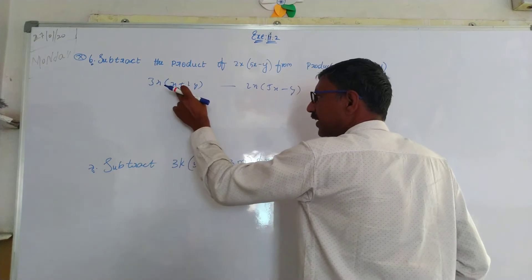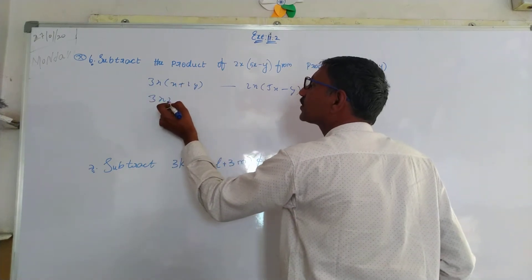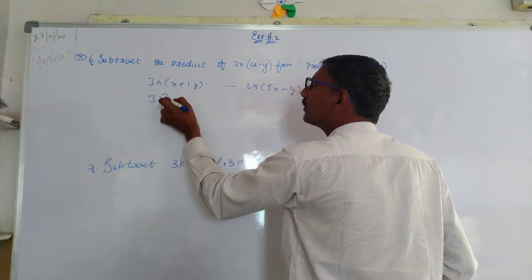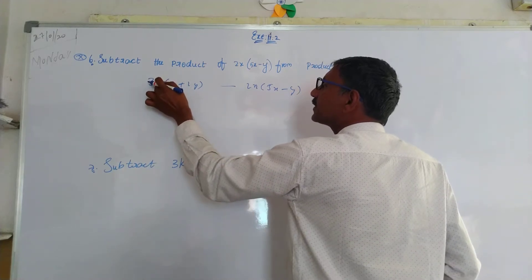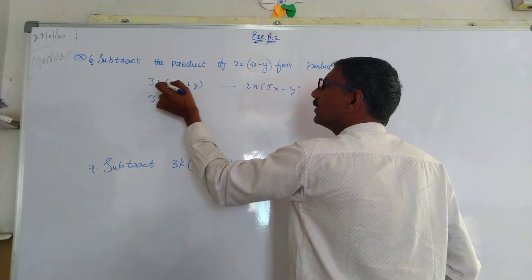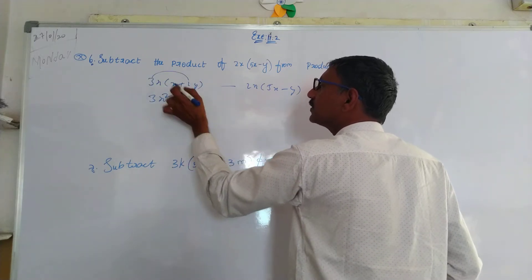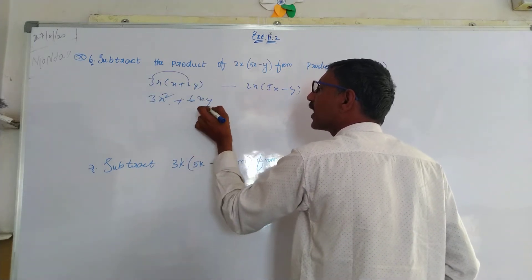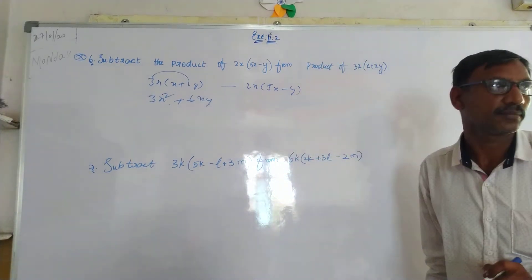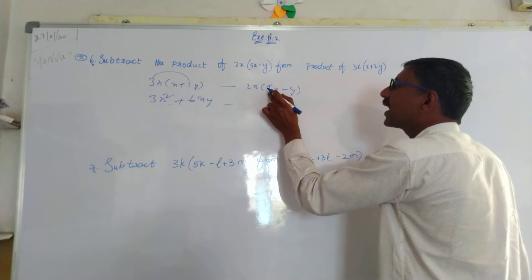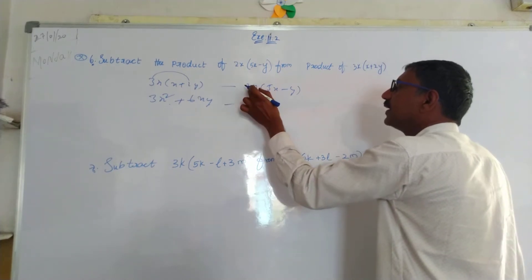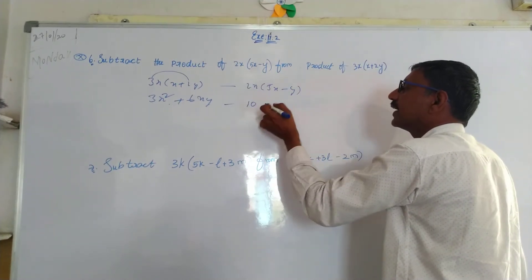3x into x is 3x squared. Minus, 2 times 5 is 10, x into x is x square. 2 into 2x into y is 2xy.